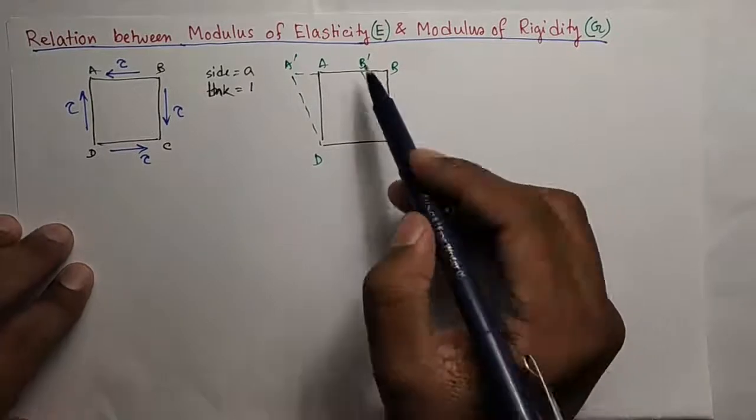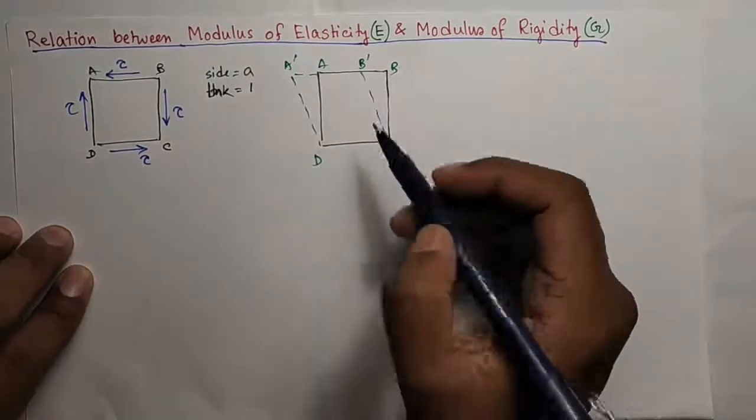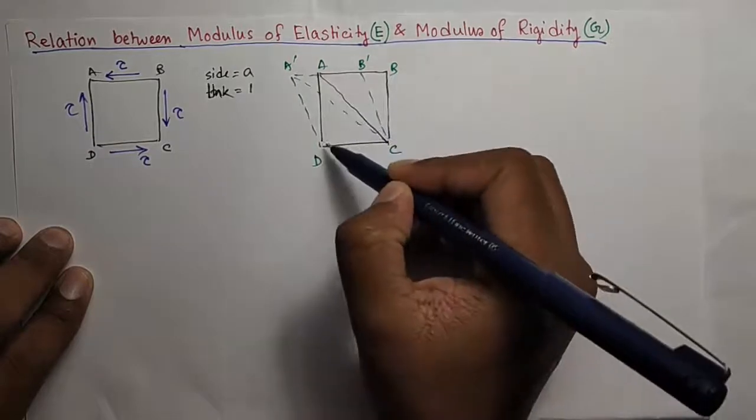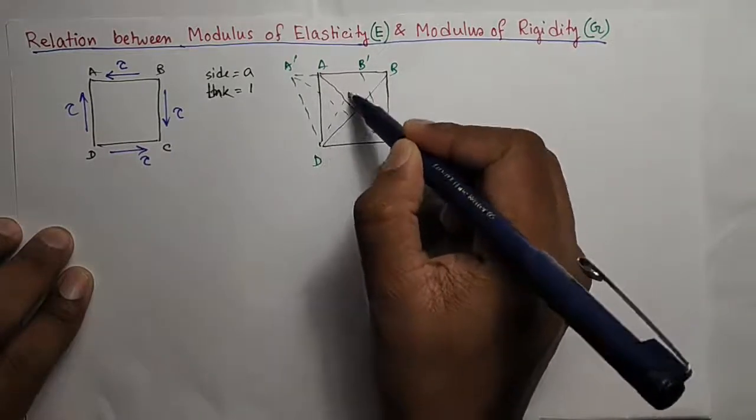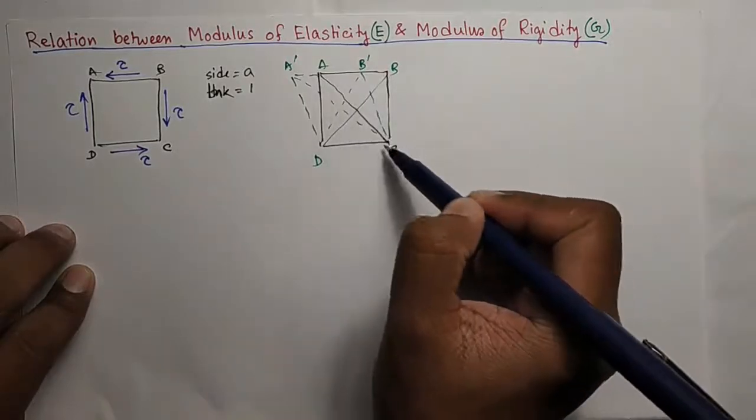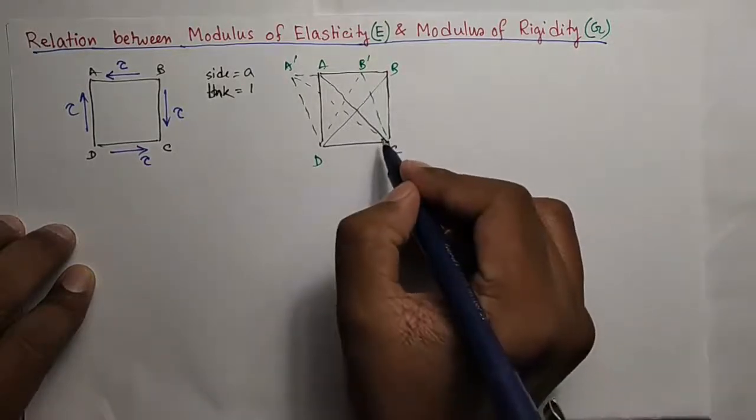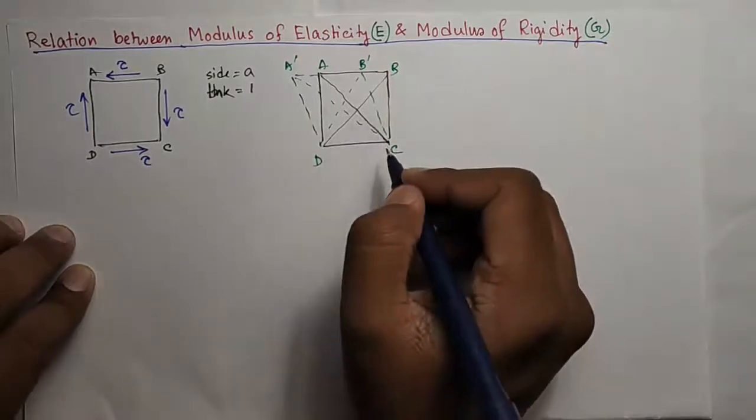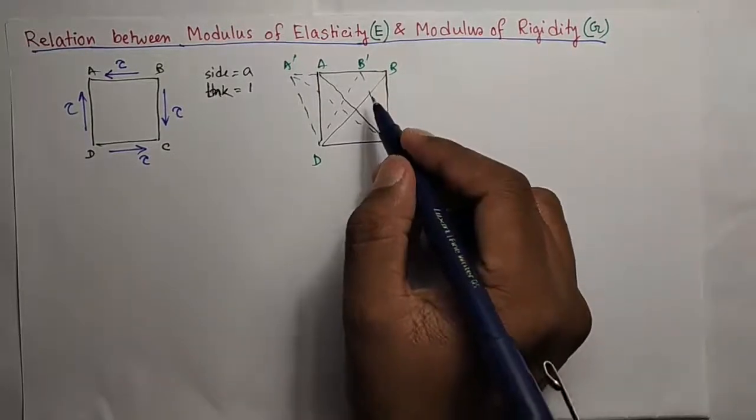Now see carefully that as a result of this deformation, the diagonal AC is increased to A'C and the diagonal BD is reduced to B'D. This means that along the diagonal AC, there is some tensile stress and along diagonal BD, there is some compressive stress. And we have to calculate this tensile and compressive stress.